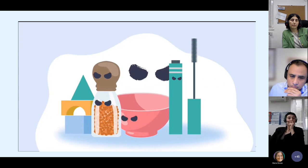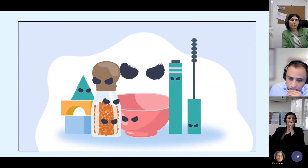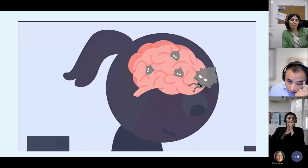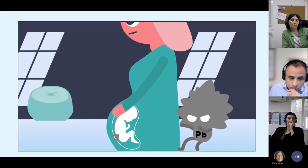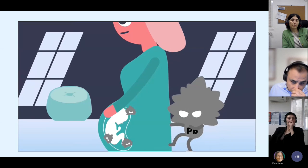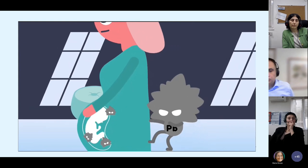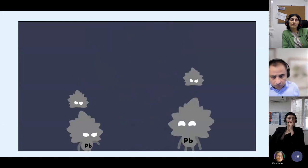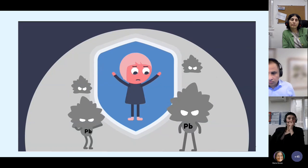Once it's in the environment, lead lurks quietly and its effects are insidious — symptoms are difficult to spot, and sometimes there are no warning signs at all until it's too late. The effects on the developing brains of young children are particularly severe. For pregnant women, lead exposure can harm their unborn child and raise the risk of miscarriage, stillbirth, premature birth, and low birth weight. There's no cure for lead poisoning — the damage it causes cannot be reversed. The only solution is prevention.